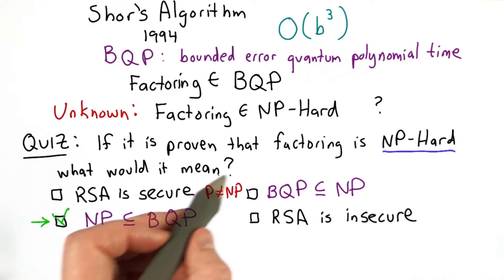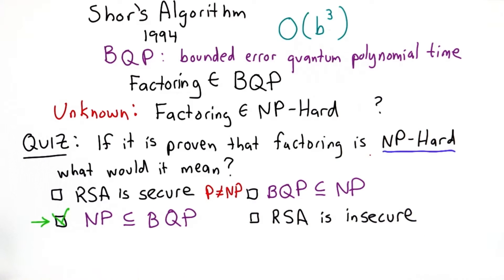And if it's also shown that P is not equal to NP, well then this would mean that there is not any polynomial time solution for factoring with a classical computer. So that would greatly increase our confidence that RSA is secure.